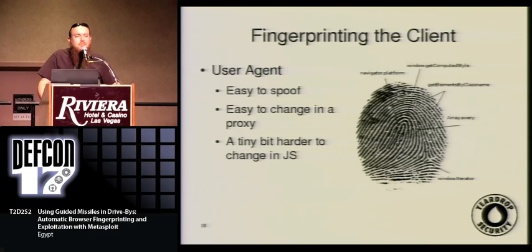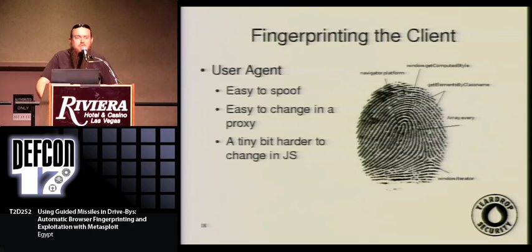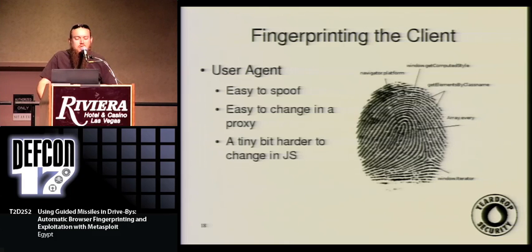Most of the available stuff for detecting what a browser is uses the user agent string — a string that goes in the headers of an HTTP request that supposedly uniquely identifies any given browser. The problem is that it's really easy to spoof. Firefox, Opera, and Safari all have things that allow you to change the user agent to look like IE, because a lot of websites are broken and you have to look like IE for them to work. It's also easy for a proxy to change or completely remove. If you've got a corporate proxy and everybody funnels through it, the proxy can change anything, making it much harder for us to detect.